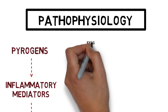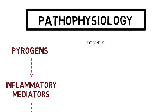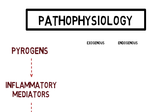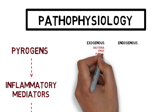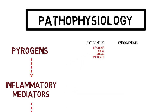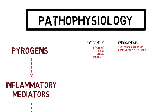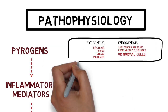Pyrogens can be divided into exogenous — from outside of our body — and endogenous, or things already inside our body. Exogenous examples are bacteria, virus, fungal and parasites. Endogenous examples include substances released from necrotic or injured cells, substances never exposed to our immune system because they are located intracellularly, or substances released by normal cells as seen in autoimmune disease.